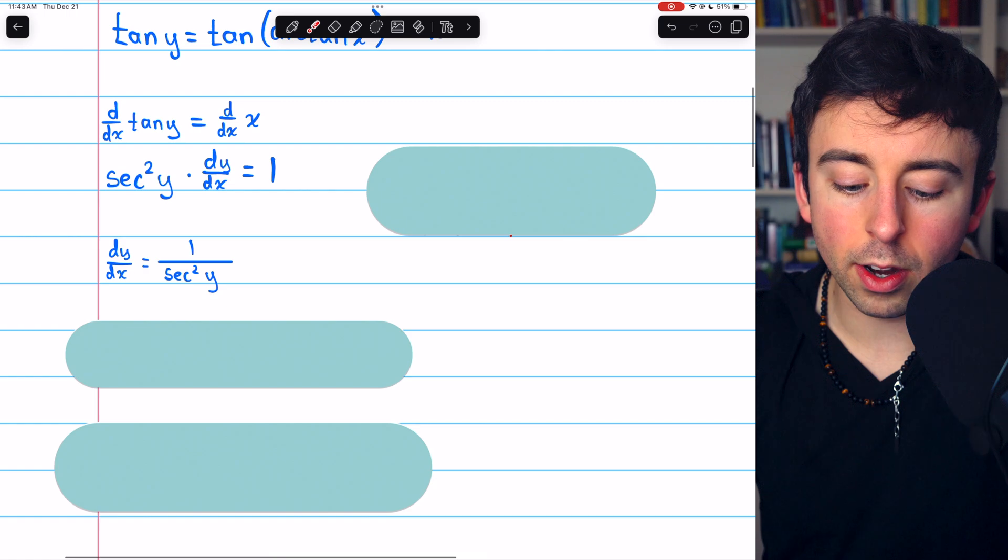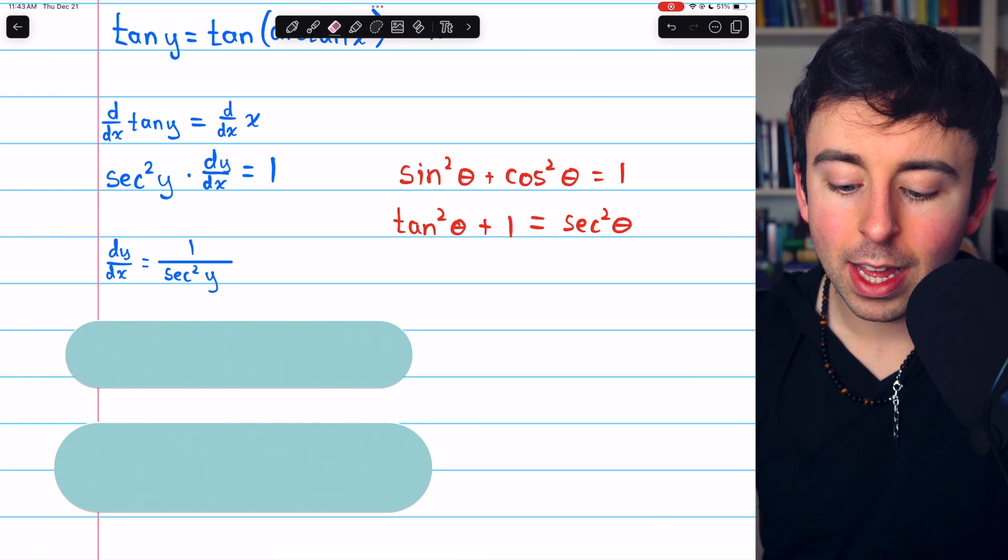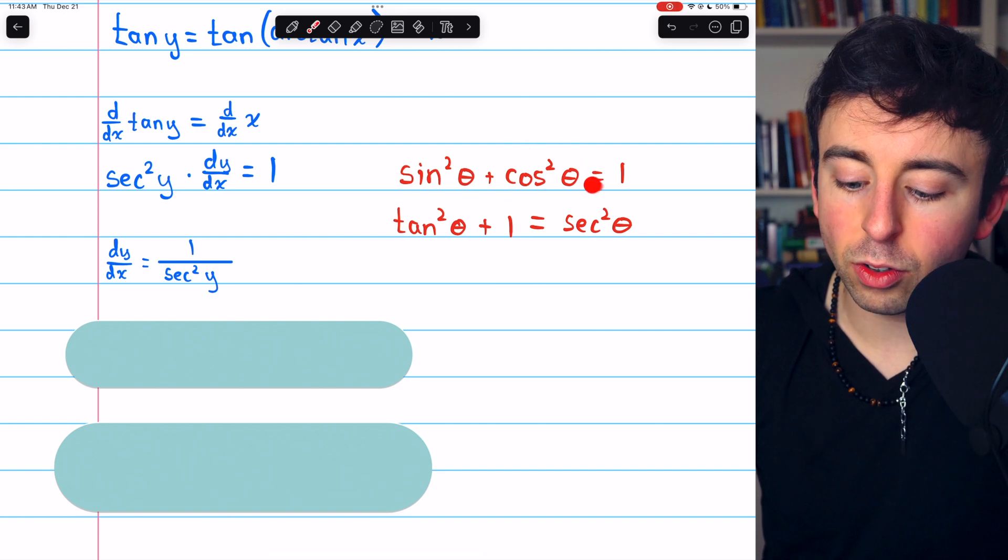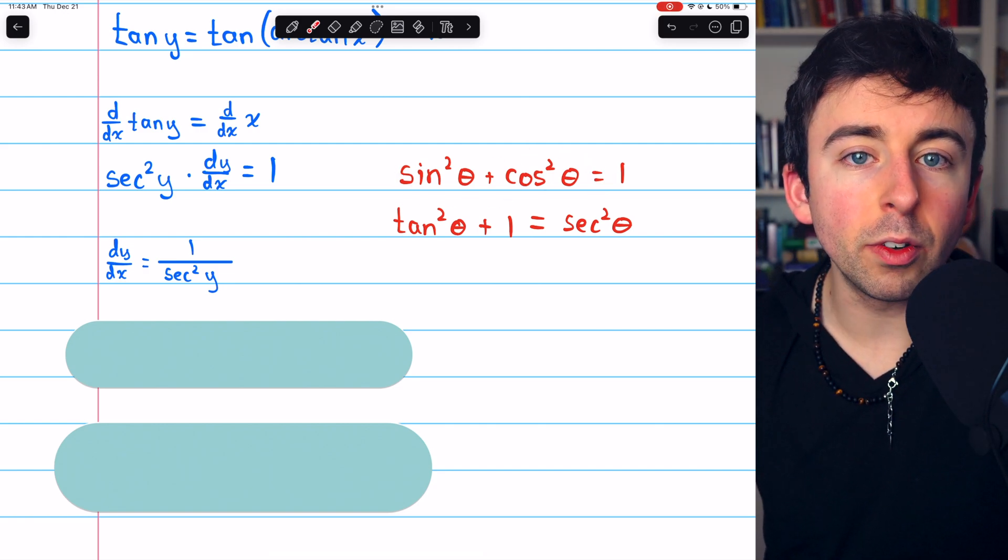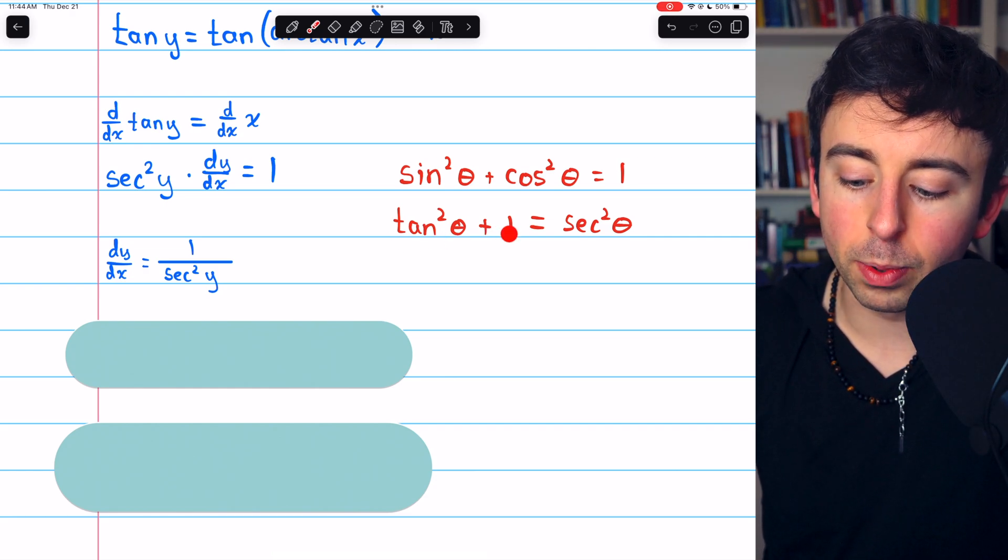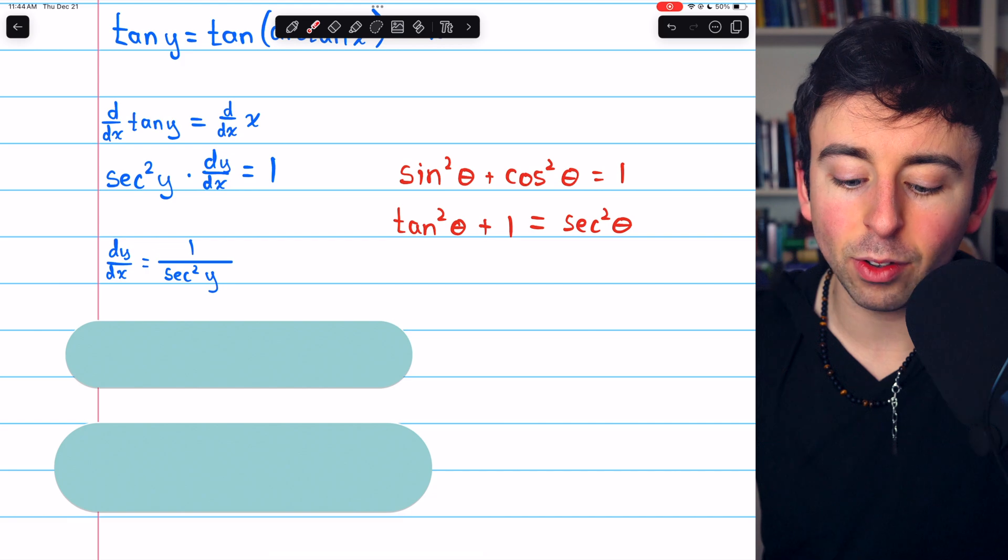Then dy/dx equals 1 over secant squared y. Then we can use a trig identity. We know sine squared plus cosine squared equals 1. So if we divide both sides of this equation by cosine squared,